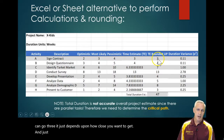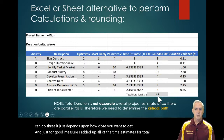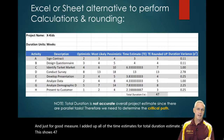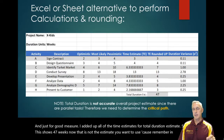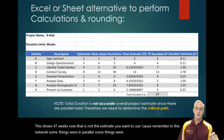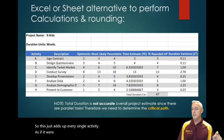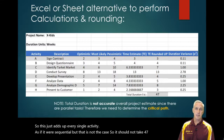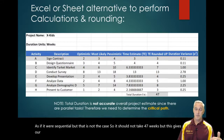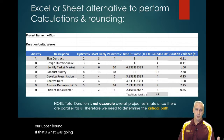Just for good measure, I added up all of the time estimates for a total duration estimate — that shows 47 weeks. However, that is not the estimate you want to use. Because remember, in this network some things were in parallel, some things were in series. This just adds up every single activity as if it were sequential, which is not the case. It should not take 47 weeks. This gives us an upper bound, but that is not a number you should use.